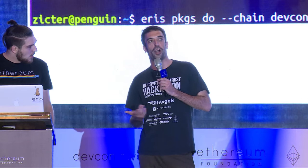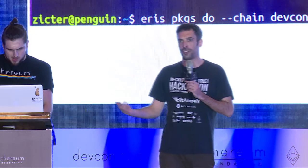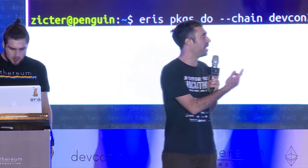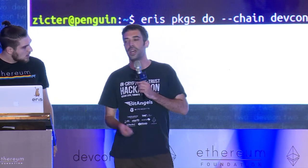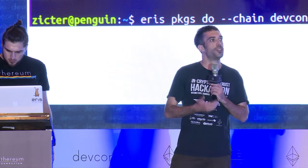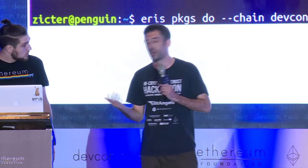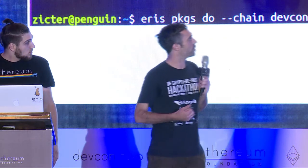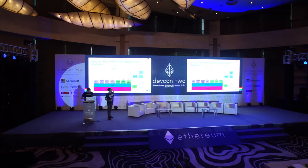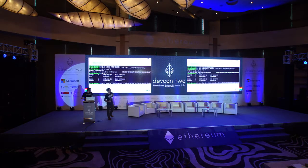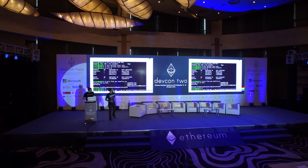The third command you would run is `aris packages do`. You give it the chain name, you give it the address that would have contract deploy permission on that chain, and you're off to the races. That command would be run from a directory containing all your smart contracts and the EPM YAML file, which RJ will be talking about.